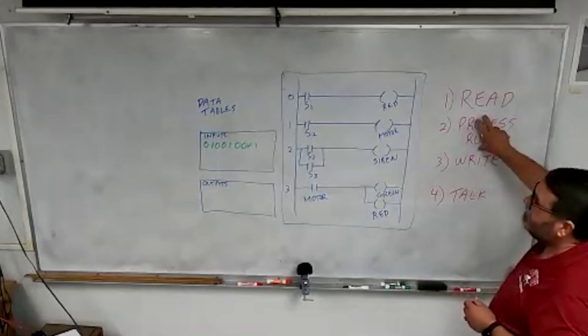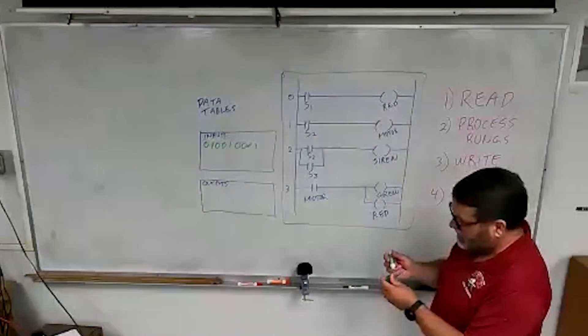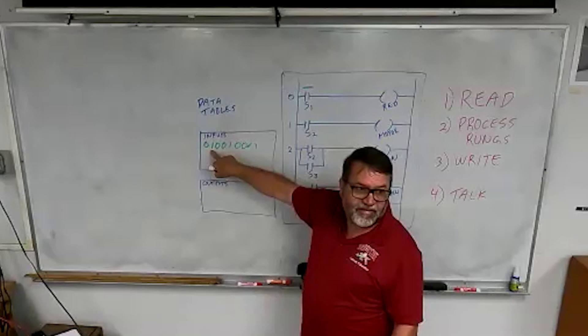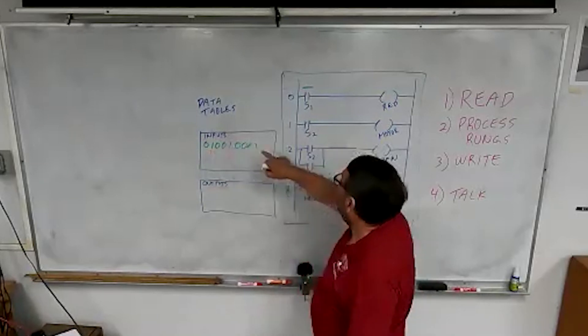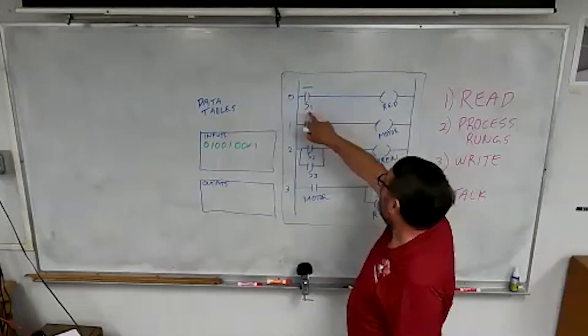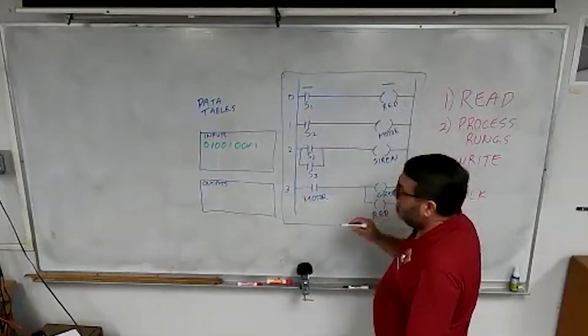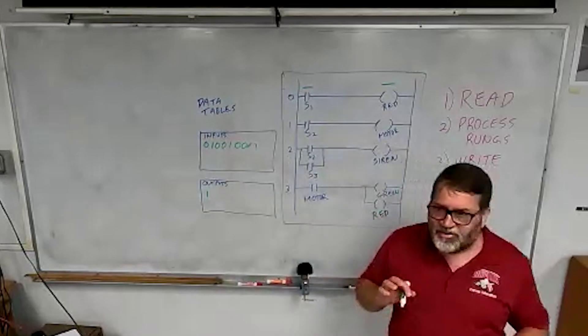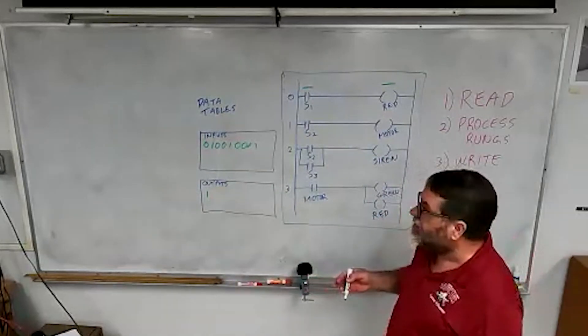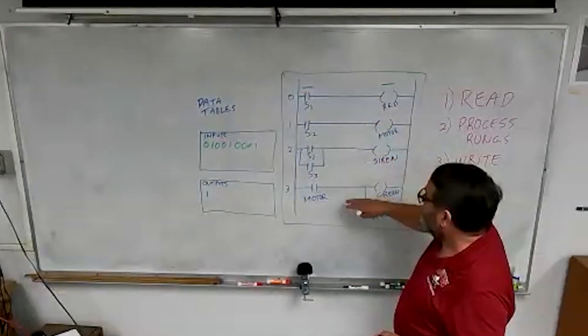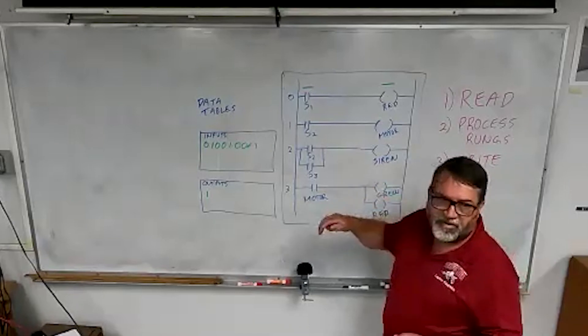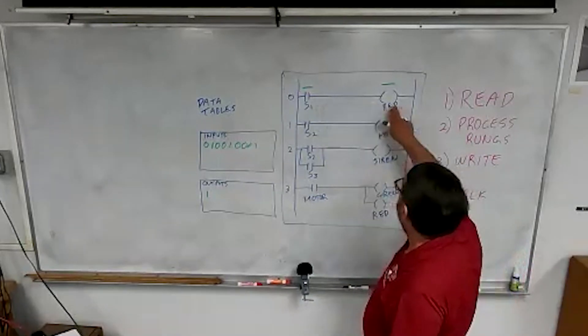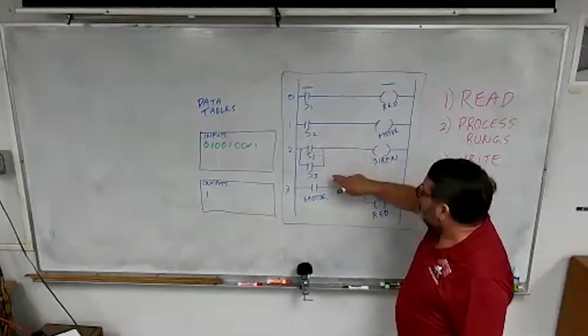The next step, they go and process all the rungs. And for example, if switch one is hot. So let's say that this address over here, this is switch one, and it's hot. So when it processes the rungs, it's going to say, okay, switch one is hot. And so I'm going to turn on a red light, and over an output, it's going to put a one to turn on a red light, but it doesn't actually turn that light on yet. It's just making a note that it has to turn it on. So it goes through all the rungs, and it figures out what it's going to do when it talks to the outputs. So switch one is hot. So the red is going to go hot, and the rest of these are all cold.